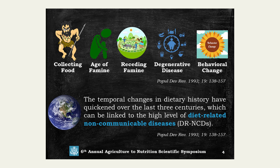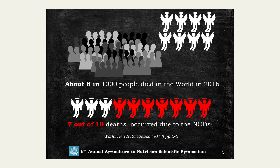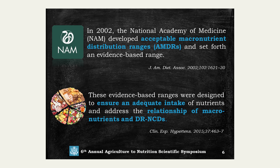In very recent statistics from World Health Statistics, it was found that 8,000 people died in the world in 2016, and among these, seven out of ten deaths were due to non-communicable disease. In response to these statistics, in 2002, the National Academy of Medicine developed the Acceptable Macronutrient Distribution Range, known as AMDR, setting forth an evidence-based range designed to ensure adequate nutrient intake and address the relationship of macronutrients to diet-related non-communicable disease.